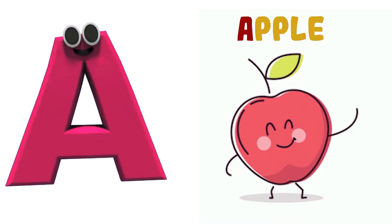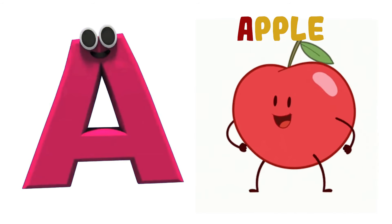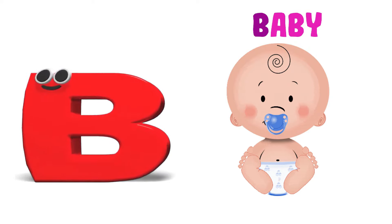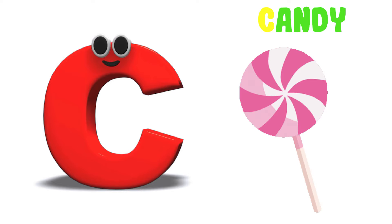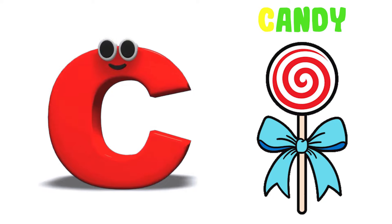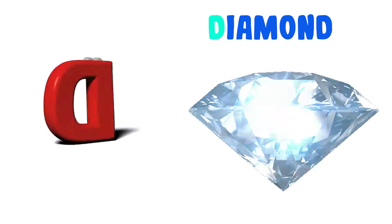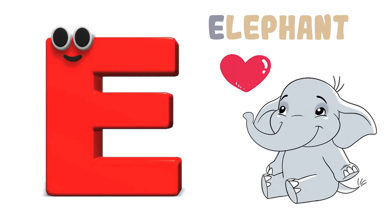A is for Apple. A-A-Apple, A-A-Apple, A-Apple. B is for Baby. B-B-Baby, B-B-Baby, B-Baby. C is for Candy. C-C-C-Candy, C-C-Candy, C-Candy. D is for Diamond. D-D-Diamond, D-D-Diamond, D-Diamond. E is for Elephant. E-E-Elephant, E-E-Elephant, E-Elephant.